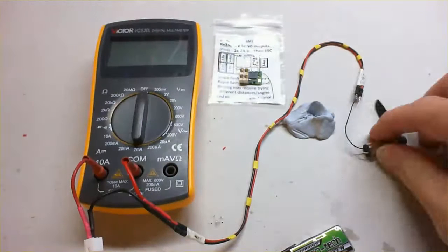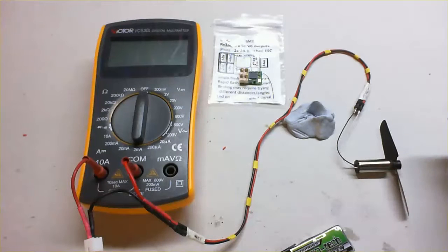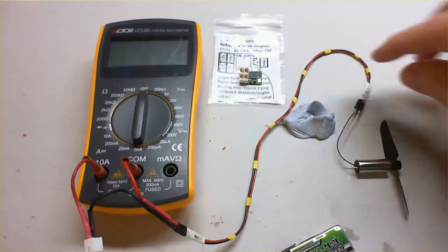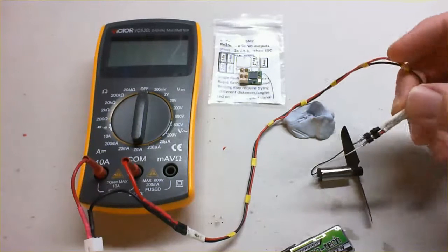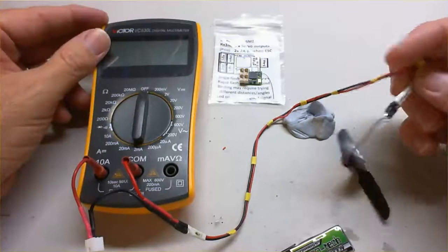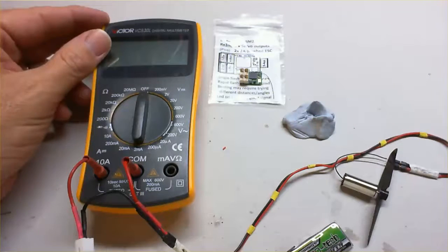So what we need to work out is if our prop and motor combination is going to pull more than 2 amps. Now to do that we need a wire setup like this with our multimeter. This is a simple multimeter, and you can see what I've actually done here...